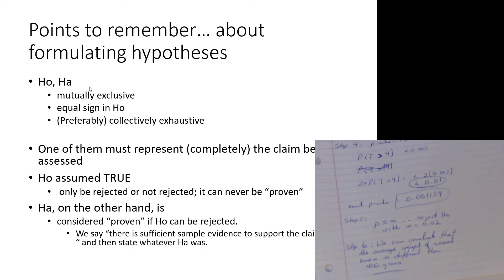A couple of things to wrap this up. H0 and HA are mutually exclusive - all the world is encompassed between them but there's no overlap. Always an equality sign in H0. One of them must represent completely the claim being assessed. H0 is assumed to be true, not proven to be true. It can be rejected or not rejected. HA has to be considered proven if H0 is rejected. Our concluding statements reflect that - we either established what is in HA is correct or we've not established it is correct. The sentence varies by just the word 'not'.